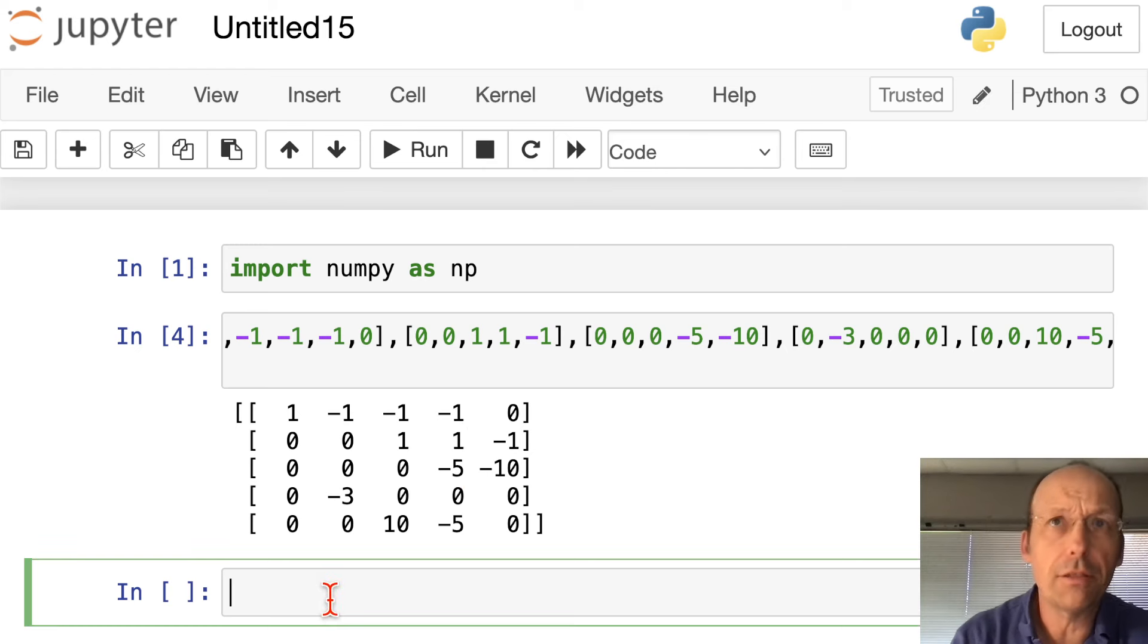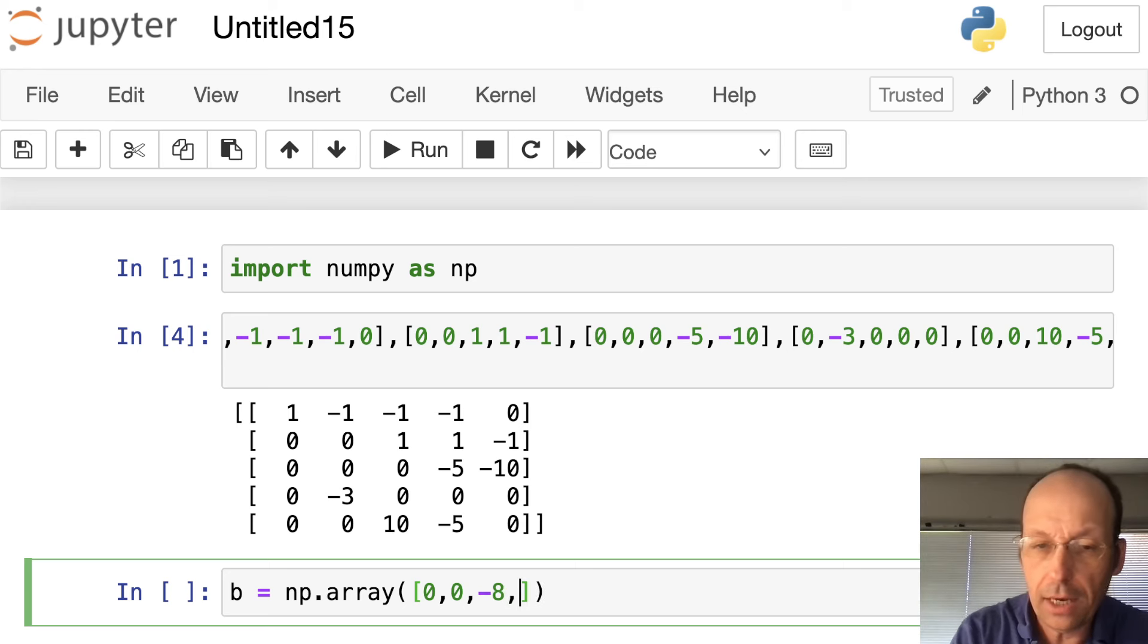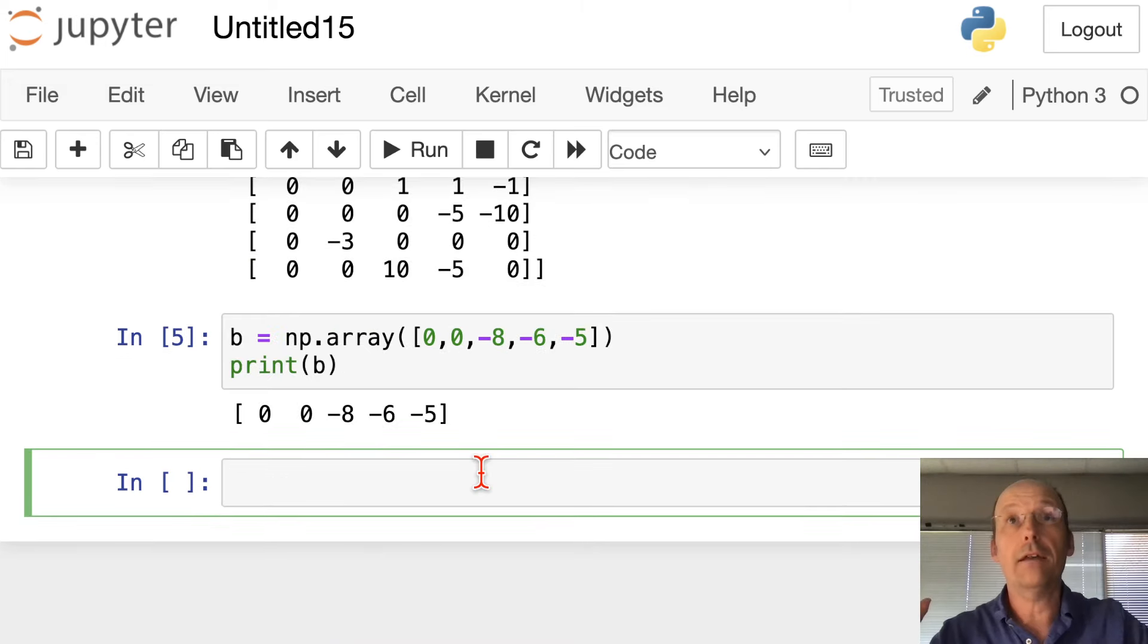Next, I'm going to do it in another cell just for fun. I'm going to make the vector B. So this is also an array, NP.array, but it's only in one dimension. So I just need to enter 0, 0, negative 8, negative 6, negative 5. And I'm going to print that again just to make sure things are working. Okay, that's what I had.